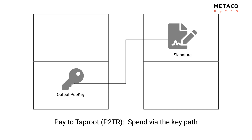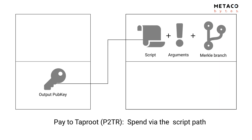To spend a Taproot output, you have two ways. One way is to reveal a signature that is valid under the output public key — that's the key path spend. The other way is that the output public key also commits to several scripts. You can take one of those scripts and — a bit like P2SH — when you want to spend, you reveal the script and the arguments. On top of that, you also need to reveal the Merkle branch.